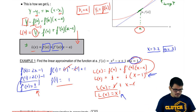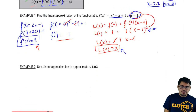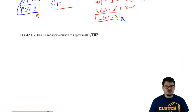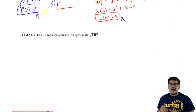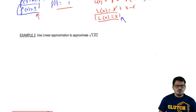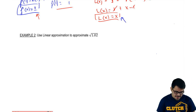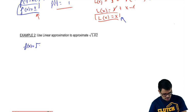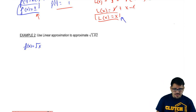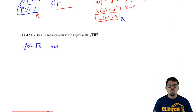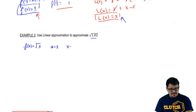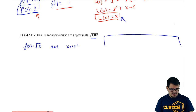Let's do another example that puts linearization together. Use linearization to approximate the square root of 1.02. This requires more thinking — we need to figure out what function to use. Since I'm approximating square root of 1.02, my f of x should be the square root of x. For a, I should use a equals 1, the closest whole number. And the actual value I'm approximating — my x — is going to be 1.02.